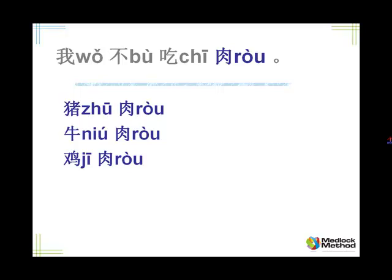The next one is lamb or mutton — and also goat meat. In Chinese you have the same word for both: 羊肉 (yáng ròu). 羊 could be goat or sheep — a woolly thing, normally white, eats grass. Tell me: my friend doesn't eat lamb. 我朋友不吃羊肉.